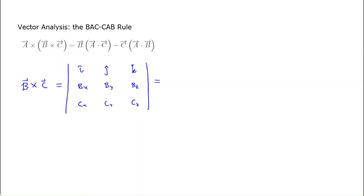What I aim to do in this video is to show you what this identity would be for one component of that triple product. First, we have to generate the entire B cross C product. If you know about cross products, you know about the determinant rule we have for calculating those, so this is not going to be a surprise.